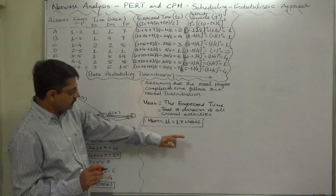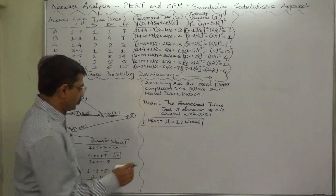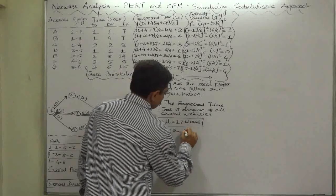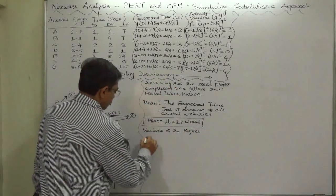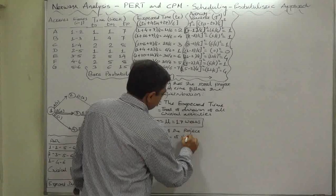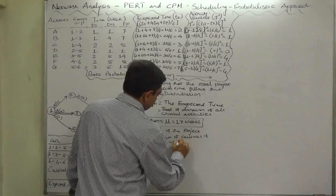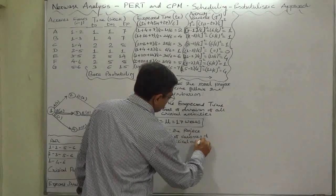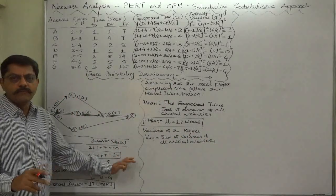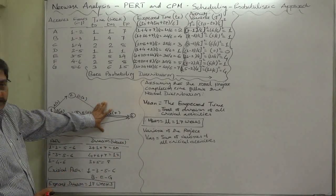To have the value of standard deviation, first of all we have to calculate the variance of the project. The variance will be the sum of variances of all critical activities. This is also only possible if we determine the critical path and recognize the critical activities from the network.